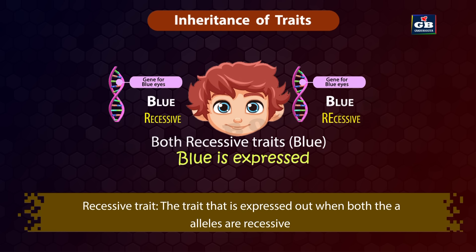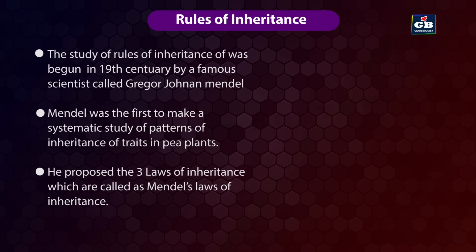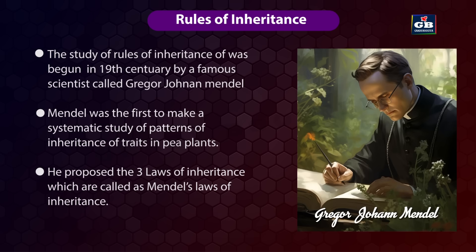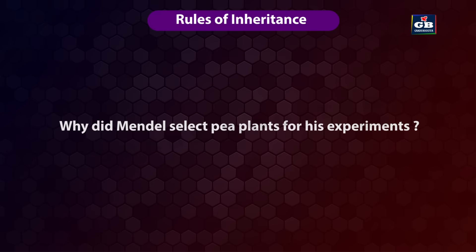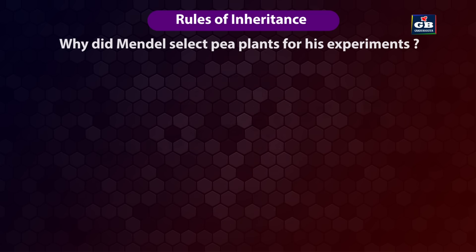The study of rules of inheritance was begun in the 19th century by the famous scientist Gregor Johann Mendel. Mendel was the first to make a systematic study of patterns of inheritance of traits in pea plants. He proposed three laws of inheritance, called Mendel's laws of inheritance. Mendel chose pea plants, Pisum sativum, for his experiments for several reasons.